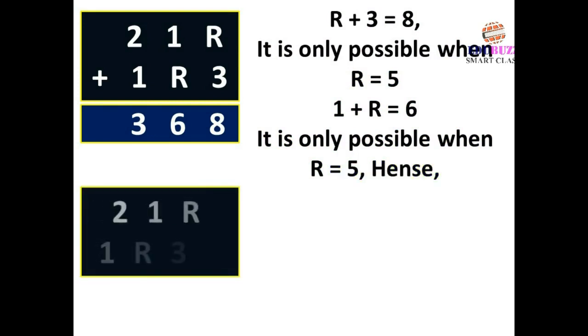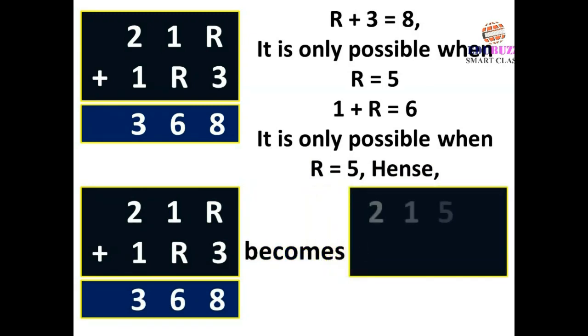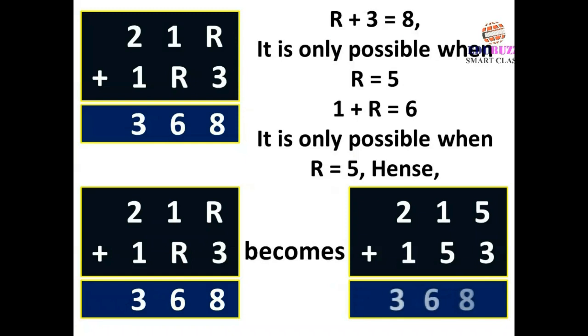Hence, 21R plus 1R3 equals 368 becomes 215 plus 153 equals 368. Thank you.